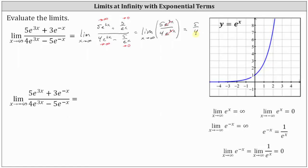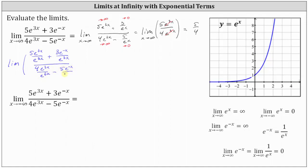Now let's take a look at a second method. When we had polynomials, one method we used was to divide every term by the highest power of the variable from the denominator. In this case, we can divide every term by e raised to the power of 3x. We would have the limit of 5e to the power of 3x divided by e to the power of 3x, plus 3e to the power of negative x divided by e to the power of 3x, all divided by 4e to the power of 3x divided by e to the power of 3x, minus 5e to the power of 3x divided by e to the power of 3x, as x approaches infinity.